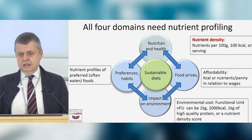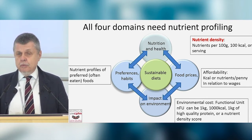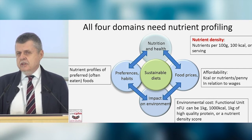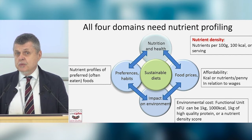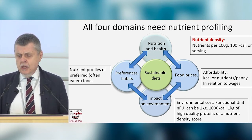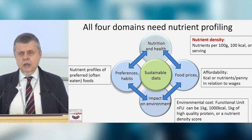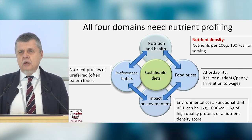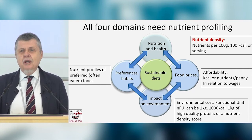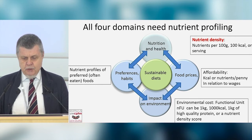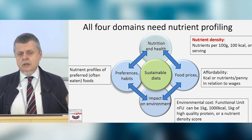For nutrient density, we can look at nutrients per 100 grams, 100 calories, or per serving. Affordability is measured in terms of calories or nutrients per penny, sometimes in relation to prevailing wages. Environmental costs involve the functional unit as the key issue. I've also been working on a measure of maximum nutrients per unit of pleasure — combining pleasure, enjoyment, and nutrient composition of foods.